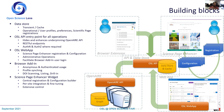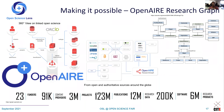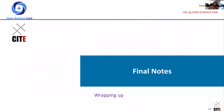A few words about the OpenAIRE Research Graph: through the aggregation of a vast number of content providers, funders, projects, publications, and research data, along with curation, linking, deduplication, and further processing to produce the Research Graph, the amount and quality of information easily accessible to build on top of is pretty much what has enabled us to provide the value-adding service we are offering.